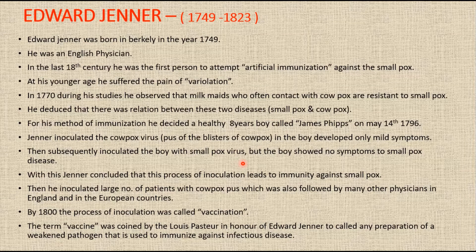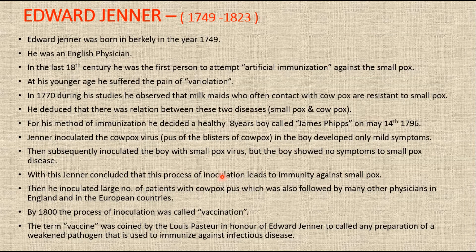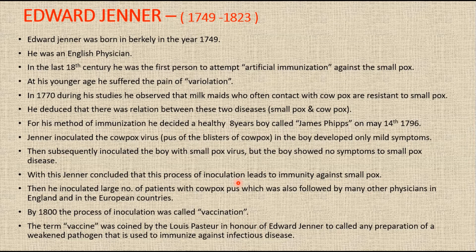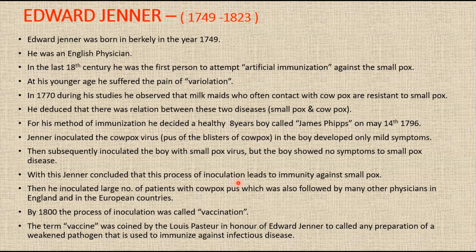Thus the boy had immunity from smallpox. Subsequent studies and data collection by Jenner from similar experiments clearly proved that the cowpox fluid would indeed offer immunity against smallpox. Jenner published his findings in June 1798 in what is now the famous pamphlet titled 'An Inquiry into the Causes and Effects of the Variolae Vaccinae.' This may truly be regarded as one of the greatest achievements ever made by man in his quest for conquering disease, and is hailed as a significant milestone in the history of microbiology.